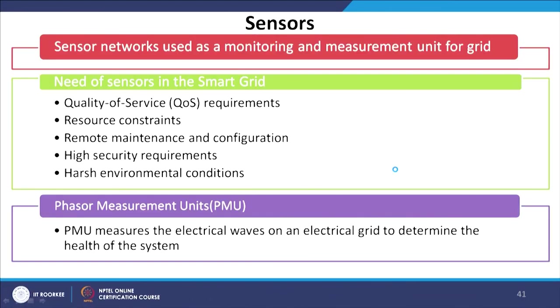Now let us move to the second important component of smart grid: sensors. Sensor networks are used as monitoring and measuring units for a grid. The need for sensors in the smart grid is mainly due to requirements for quality of service, resource constraints, remote maintenance and configurations, high security requirements, and higher environmental conditions.